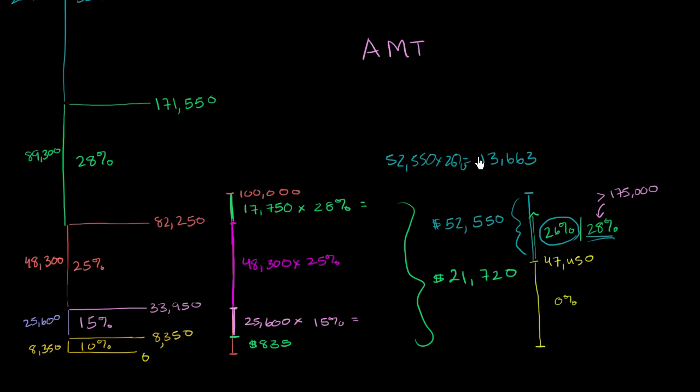So this would be the alternative minimum tax calculation, this $13,000. You're like, hey, that's not so bad. Do I pay this above and beyond the $21,000 that we calculated in the first video? How does this work out? And the answer is no. The IRS or your accountant would look at both of these numbers, and you would pay the higher of the two. So in this situation, your regular taxes are higher than your alternative minimum tax. So you would just pay your regular taxes.